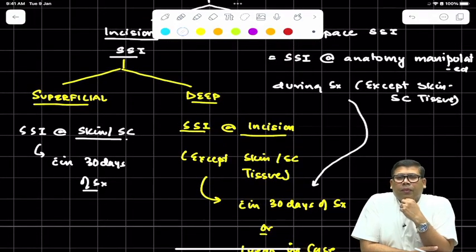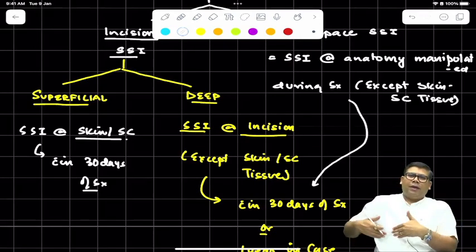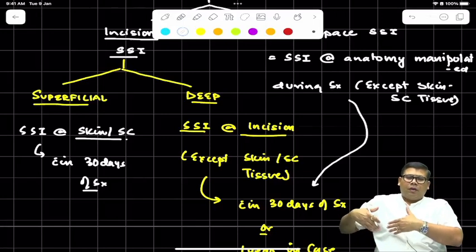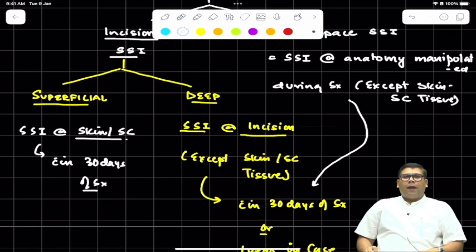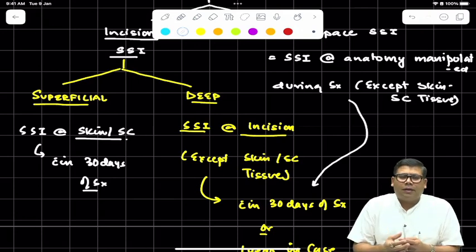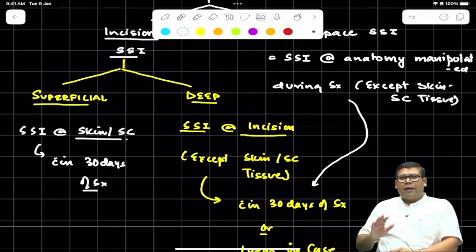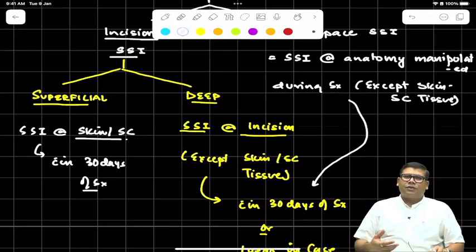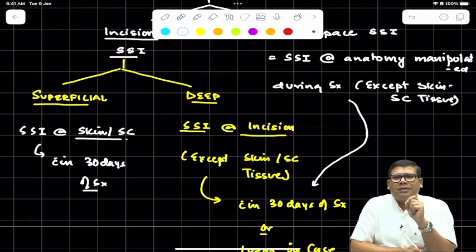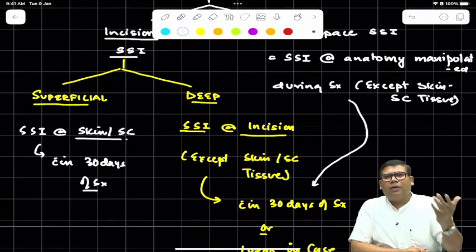Suppose I did a laparoscopic cholecystectomy and on day 15, there is a patient presenting to me with pain in the right epigastric or right subcostal region. There are chills and jaundice that the patient has developed. When you go for ultrasound, you see near the right hemidiaphragm a pus pocket. There's a pus collection below the right diaphragm or around the hepatic bed. So what is this? Is this SSI?